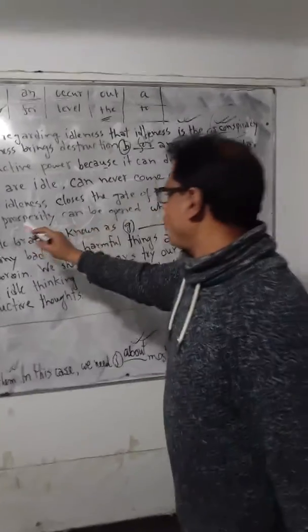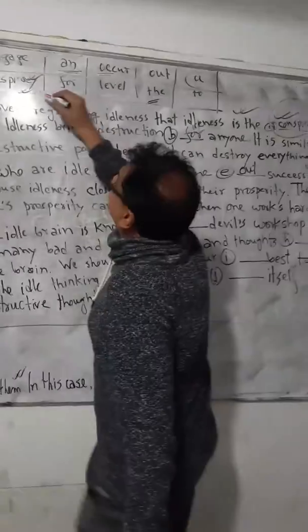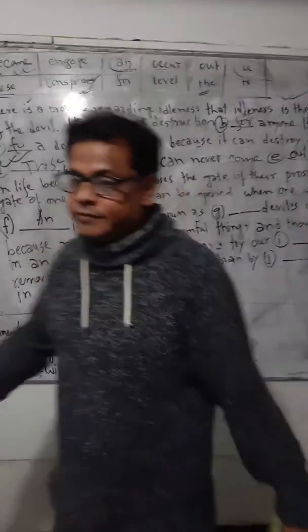The gate of one's prosperity can be opened when one works hard. 'Dash idle man is known as a devil's workshop.' We have an indefinite article here — why 'an' instead of 'a'? Because 'idle' begins with the vowel sound 'I,' so we use 'an': an idle man is known as the devil's workshop.